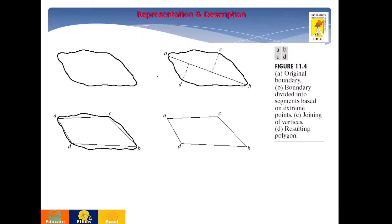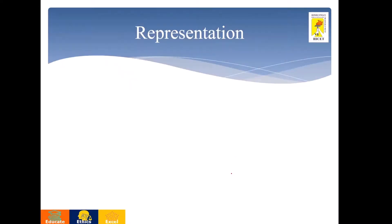Another form is merging and splitting. What we are doing is first connecting the major axis. After connecting the major axis, we find the minor axis. Perpendicular line segments are drawn for the minor axis, and that is considered as the corner, and we join it. Likewise, after that, segments a, c, d, b are identified. Then one more segment is found here and we join that one. This process can be continued until you get the exact polygon representation for the boundary.